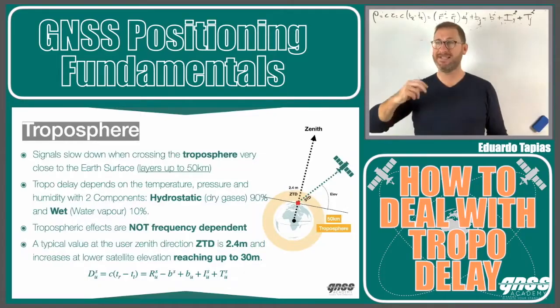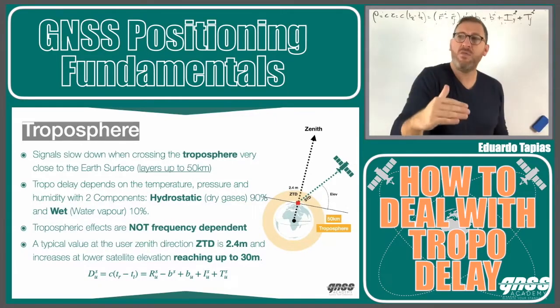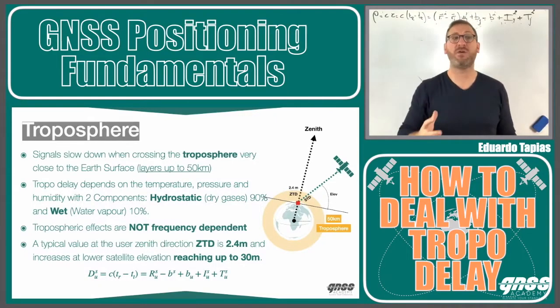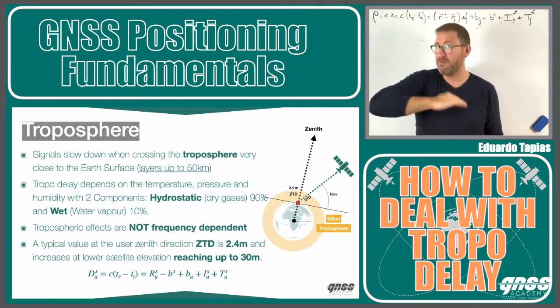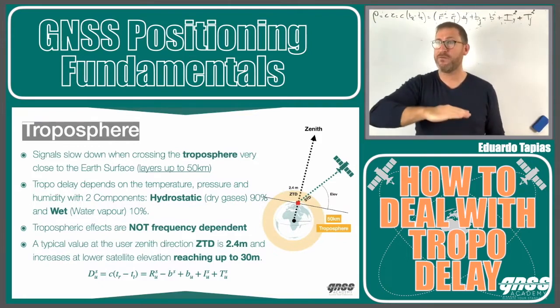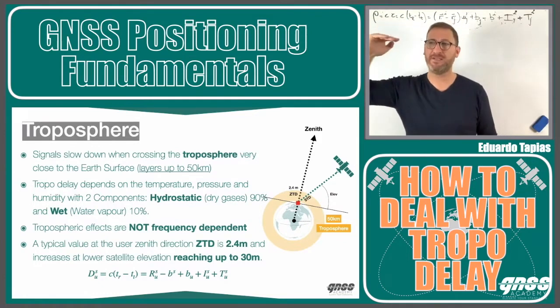Troposphere — the signals are also slowing down when crossing the troposphere. What is the troposphere? It's the layer from zero, from the Earth's surface up to 50 kilometers.